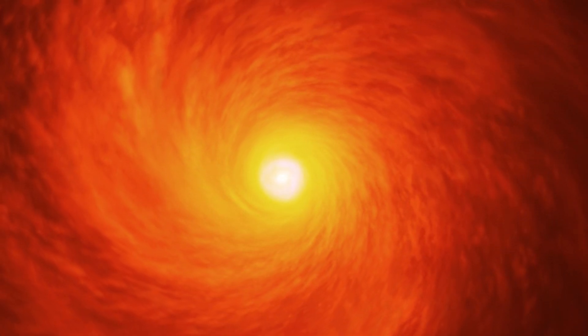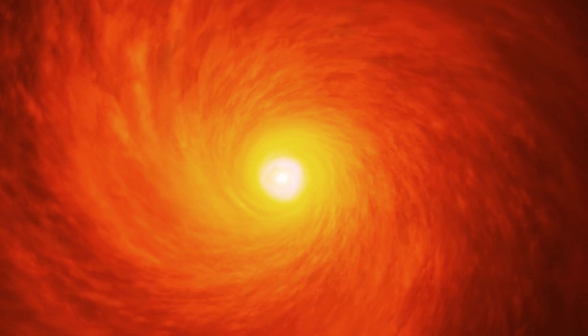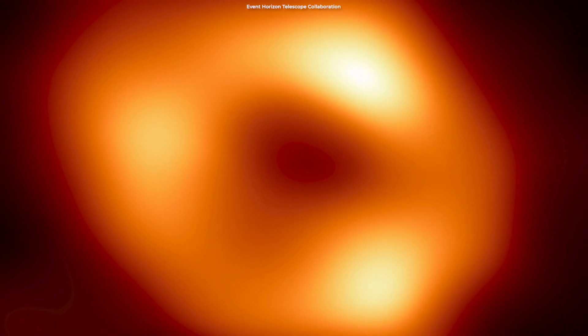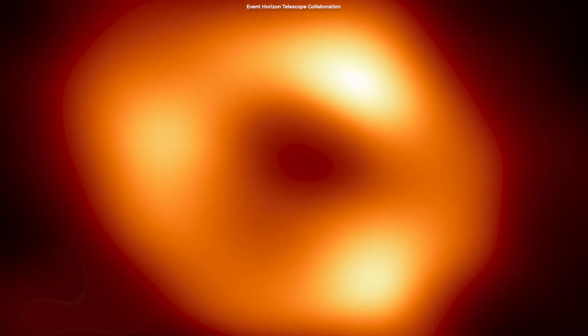Radio waves pass through gas much more easily than visible light, so astronomers measured the radio emission from the gas surrounding the black hole. The orange colors in the image are representations of those radio waves.